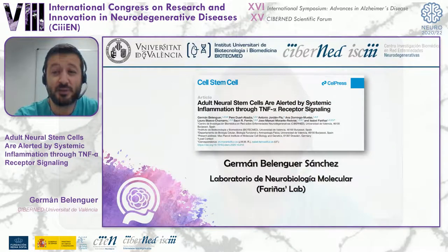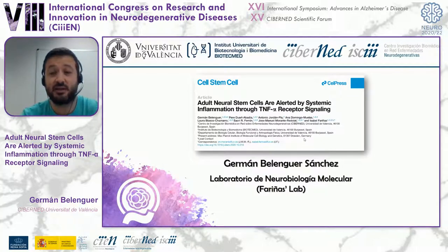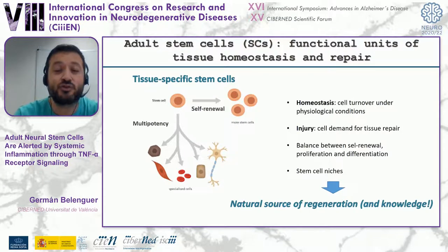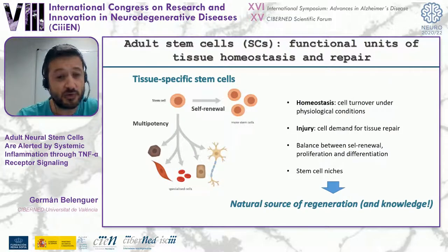Thanks for the introduction. I would like to first thank the FIRANet Committee for this award, which is an honor, and also for the opportunity to share the project from my PhD in Valencia that was published in Cell last year. We are lucky that in the vast majority of adult tissues we now know there exists a population of adult stem cells — or tissue-specific stem cells — able to generate new specialized cells while maintaining their identity to produce new cells in the future.